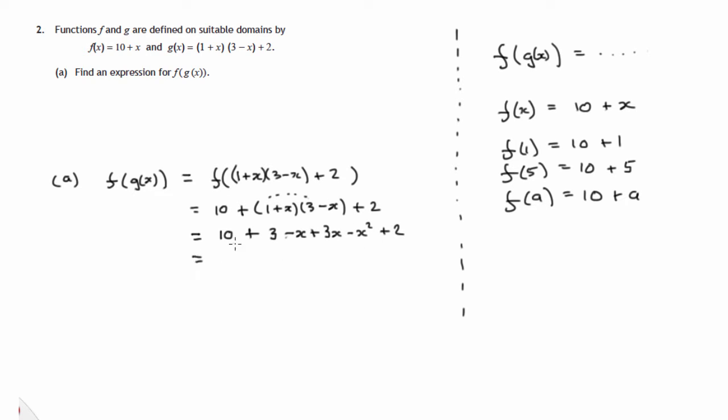And we've got a plus 2. So let's sort out the numbers. 10 plus 3 is 13, plus 2 is 15. Minus x plus 3x is plus 2x. And we've got a minus x squared. So there's an expression for f of g of x, the composition of these two functions f and g.